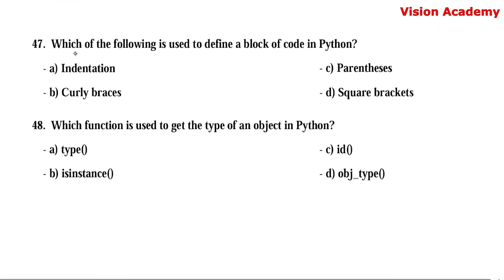Question number 47. Which of the following is used to define a block of code in Python? Option A: indentation. Option B: curly braces. Option C: parenthesis. Option D: square brackets. Here, option A — indentation — is the right answer.